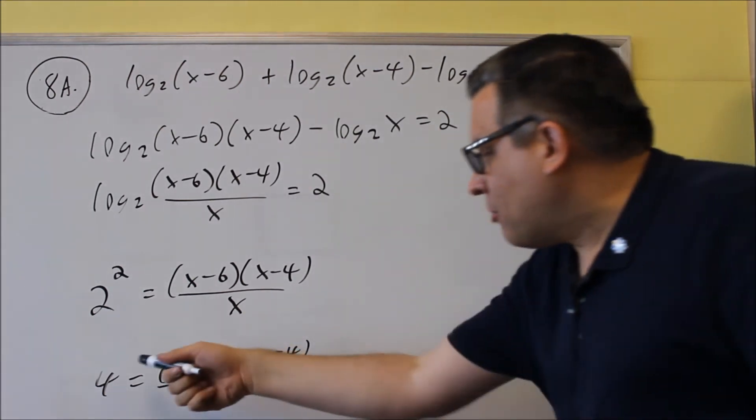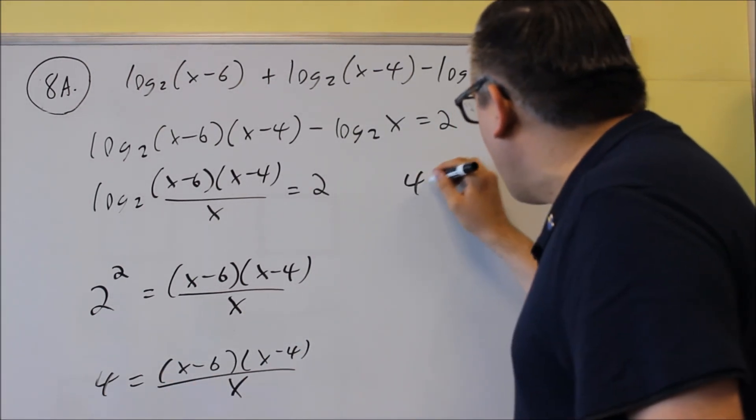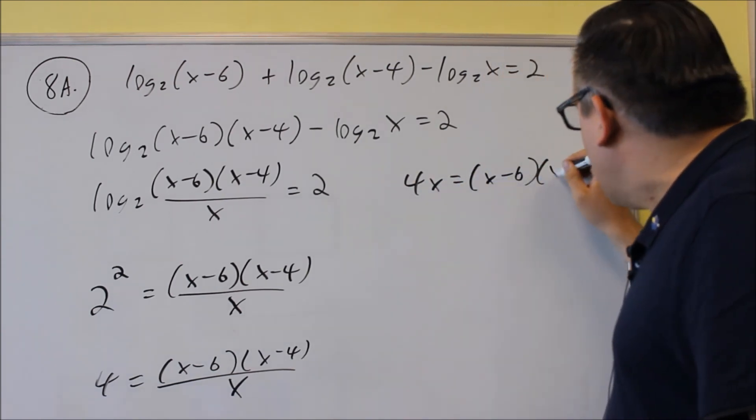And we have to multiply both sides by x to clear out the fraction. So if we do that, we're going to get four x is equal to x minus six, x minus four.